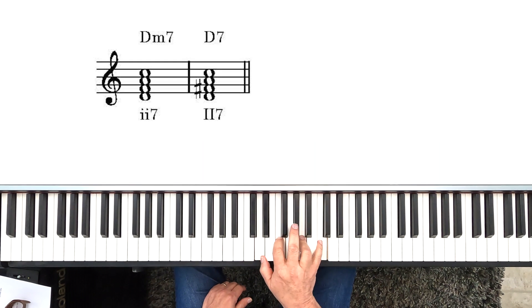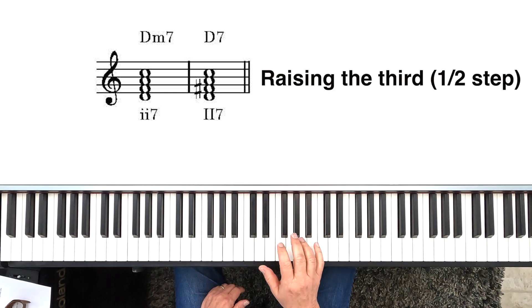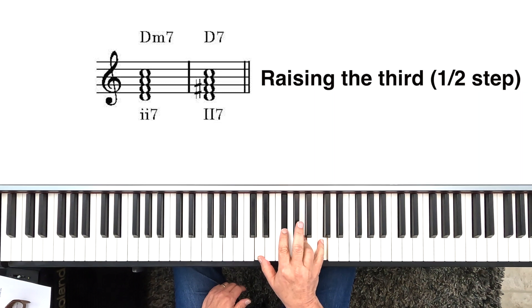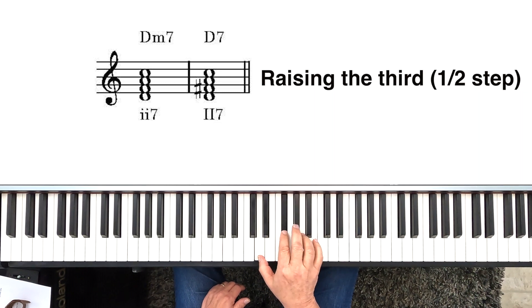The first alteration we're going to do, and this is very common in both popular and classical music, consists of raising the 3rd by half a step. This changes the minor 3rd to a major 3rd, and it converts the whole chord from a minor 7th to a dominant 7th chord.